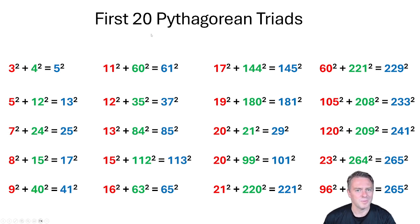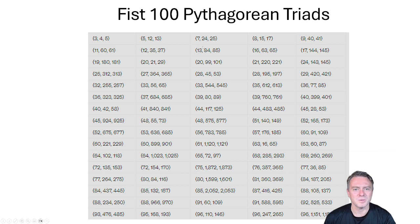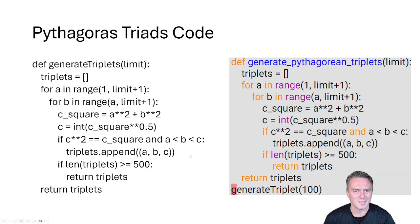That covers the first 24 Pythagorean triads satisfying Pythagoras's rule. You can then get the first 100, starting from 3-4-5 and 5-12-13 and going all the way up to values like 96, 1,151, 1,153. This list of triplets goes on to infinity — there's an infinite amount of these that pop up, which is really cool.